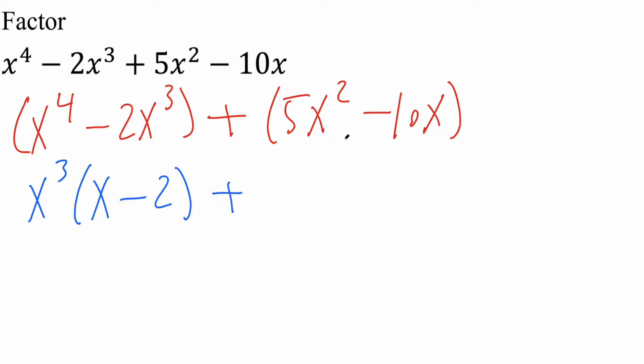Plus, now we have these two pieces and we see what can we take out. They both have an x and you could divide both pieces by 5, so we'll say 5x. 5x times what is 5x squared? Just x. And lastly, 5x times what is negative 10x? So negative 2.